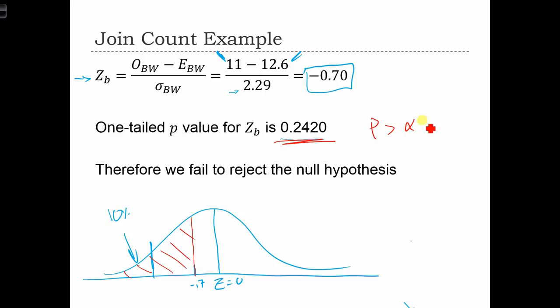In this case, p is greater than alpha, in which case we fail to reject the null hypothesis.